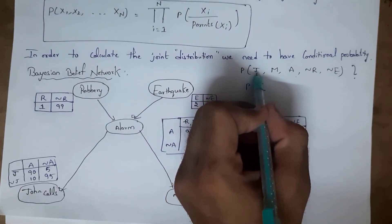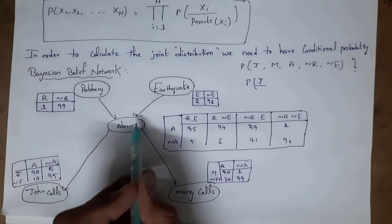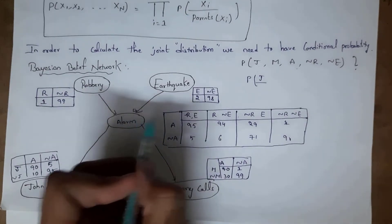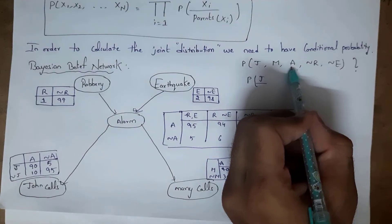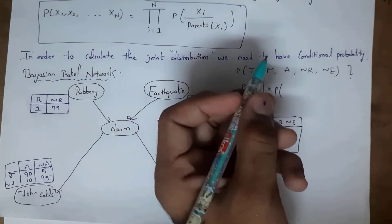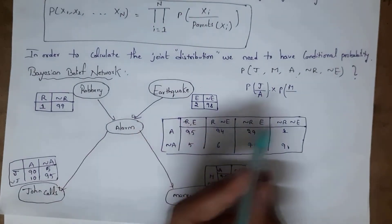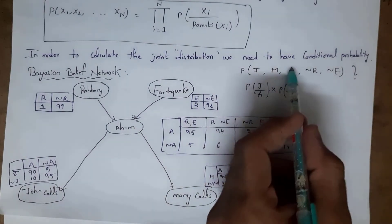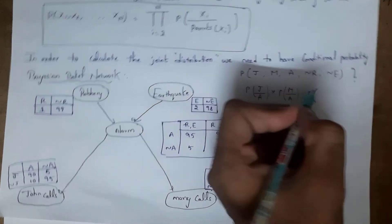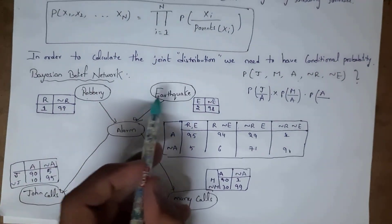Probability of John calls equals probability of John calls given its parent, which is alarm. Since the question states alarm rings, we use alarm rings. Then probability of Mary calls given alarm rings. For alarm, we need the condition robbery does not occur and earthquake does not occur, as given in the question.